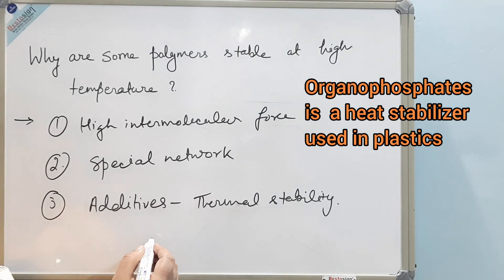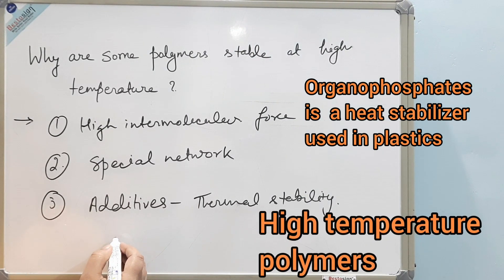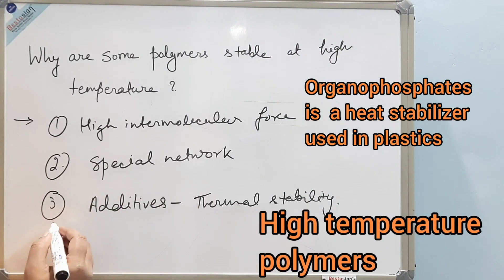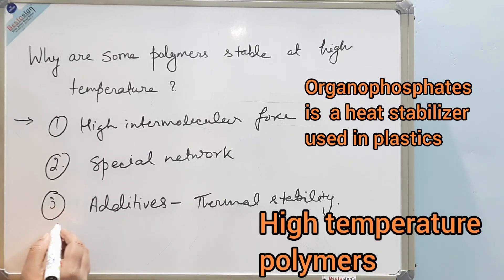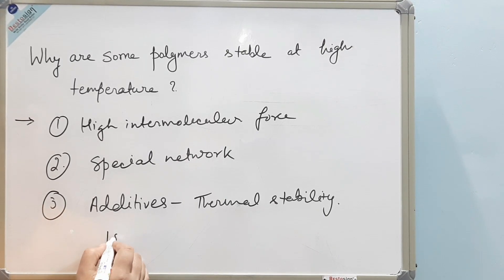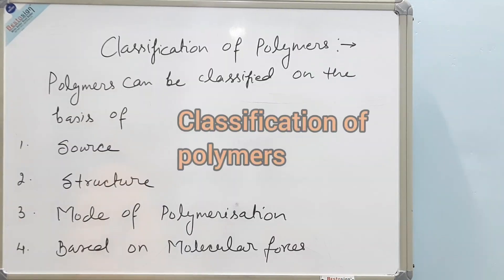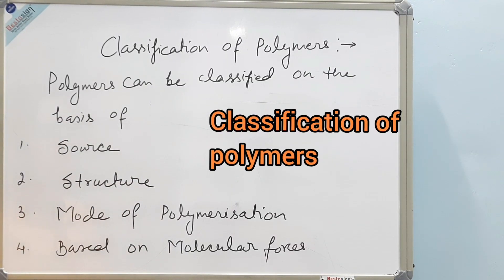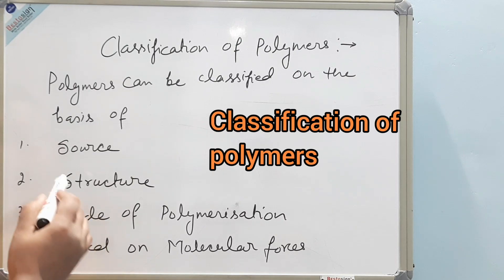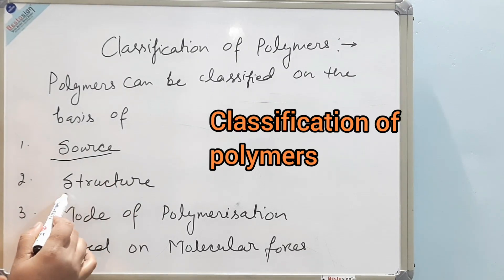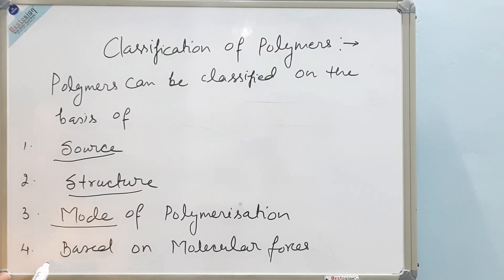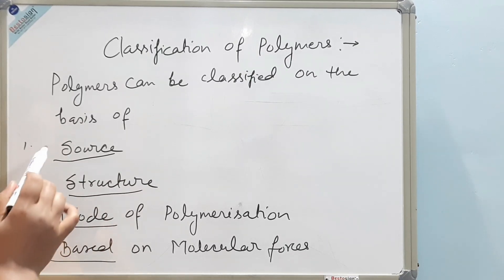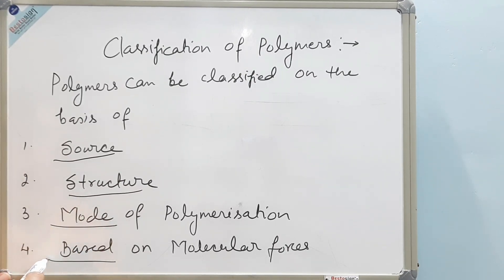These polymers are usually known as high-temperature polymers and can withstand a service temperature greater than 150 degrees Celsius. Polymers can be classified on the basis of source, structure, mode of polymerization, and based on molecular forces. These are the four categories on which we can classify any type of polymer.